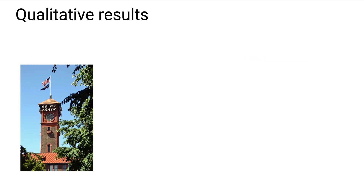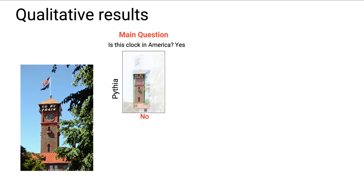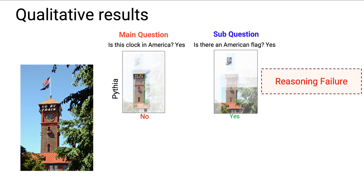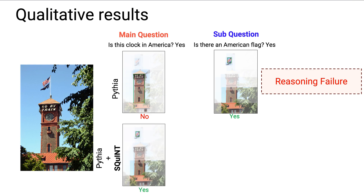For this image and the main question 'Is the clock in America?', the baseline BUTD model not only answers the question incorrectly but seems to look at the building, which does not provide the necessary information. However, for the sub-question 'Is there an American flag?', the model looks at appropriate regions containing the US flag. This is a case of reasoning failure since the model perceived correctly but wasn't able to use that for the higher-level reasoning question. On applying Squint, the model looks at appropriate regions and answers correctly.